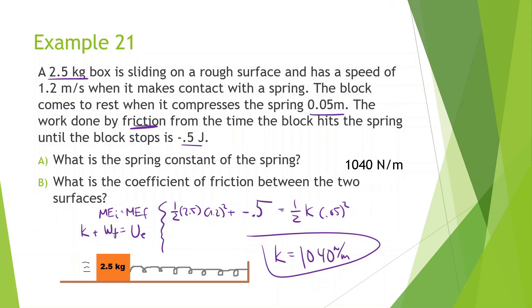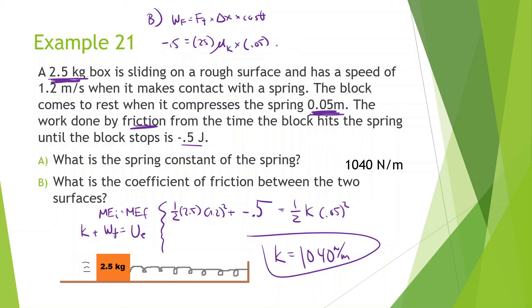What is the coefficient of friction between the two surfaces? The work of friction equals the force of friction times displacement times cosine of theta. Work of friction is negative 0.5. Force of friction is the normal force, which is 25, times the coefficient of friction (what we're looking for), times displacement 0.05 meters, times cosine of 180. Solving: 0.5 divided by 25 divided by 0.05 gives us a coefficient of friction of 0.4.